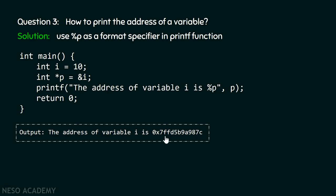This is the address in hexadecimal format of variable i. It can be different, of course — on my machine when I run this program, it gives me this address. Let's move on to the next question.